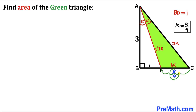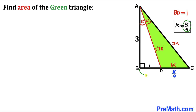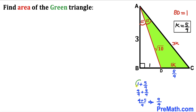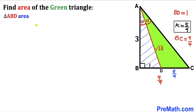With K = 5/4, we get CD = 1 · K = 5/4. Since BD = 1 and CD = 5/4, the whole side length BC = 1 + 5/4 = 9/4. So BC = 9/4.